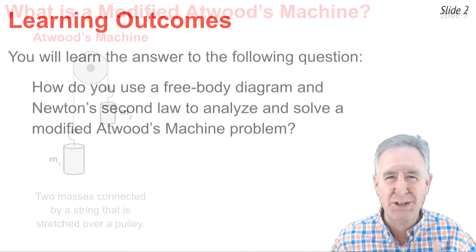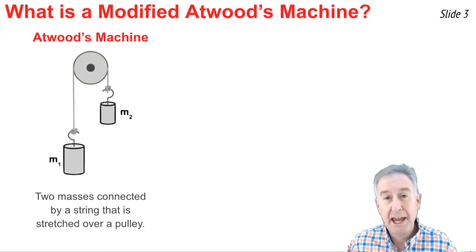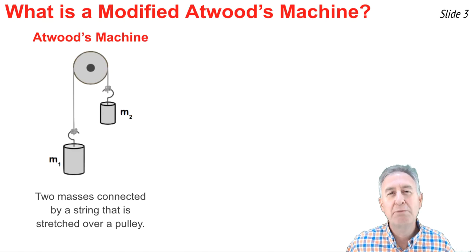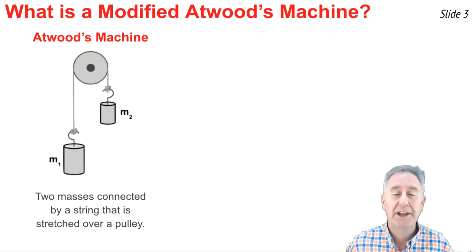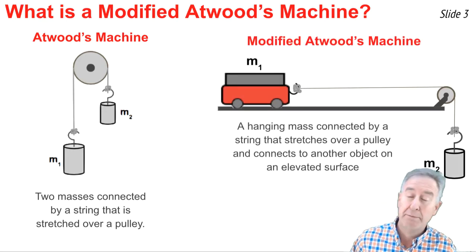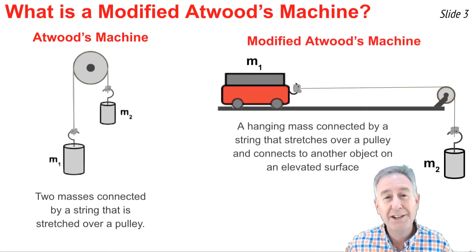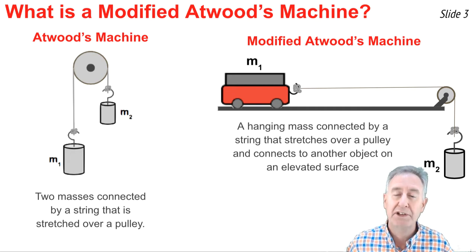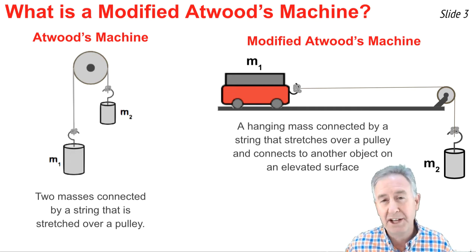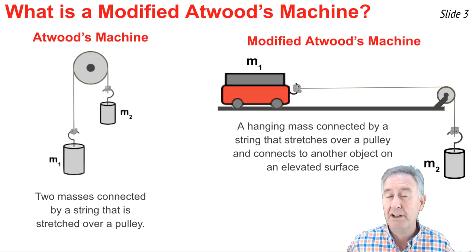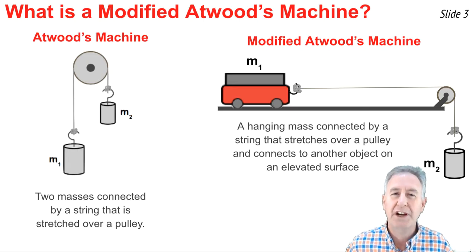I'm Mr. H. Let's get started. This is an Atwood's machine — it consists of two masses connected by a string stretched over a pulley, and it's used to study motion with uniform acceleration. This is a modified Atwood's machine: it consists of a hanging mass and a second object on some elevated surface, connected by a string over a pulley, and it too is used to study motion with uniform acceleration.